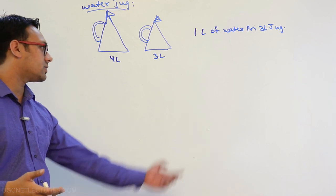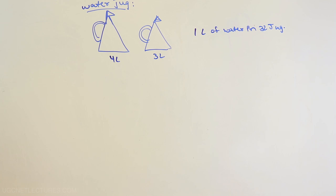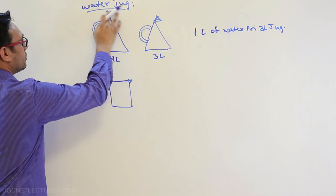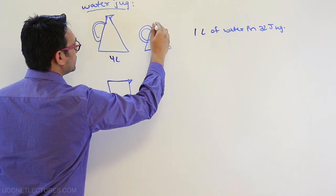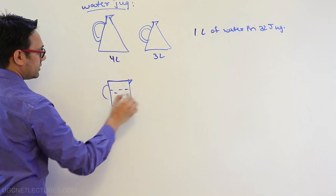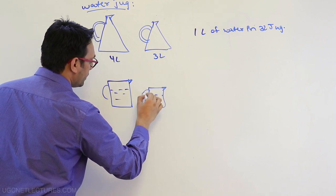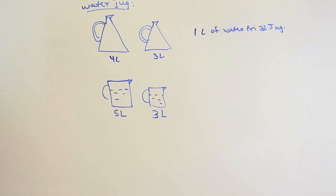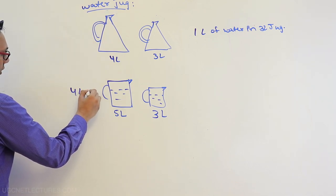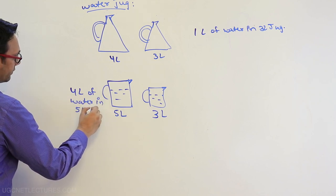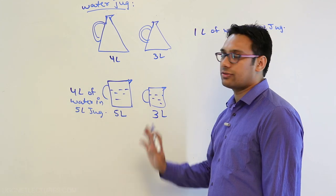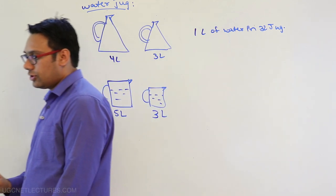The second variation is: the capacity of the first jug is five liters. Let me draw the jug in a different manner. This is the first jug and this is the second jug — the second variation of the same problem. This first jug is five liters and the second jug is three liters. Now, using the five liter and three liter jugs, can you fill four liters of water into the five liter jug? Again, there are no markings on the jugs. This jug can hold five liters and this jug can hold three liters in total.